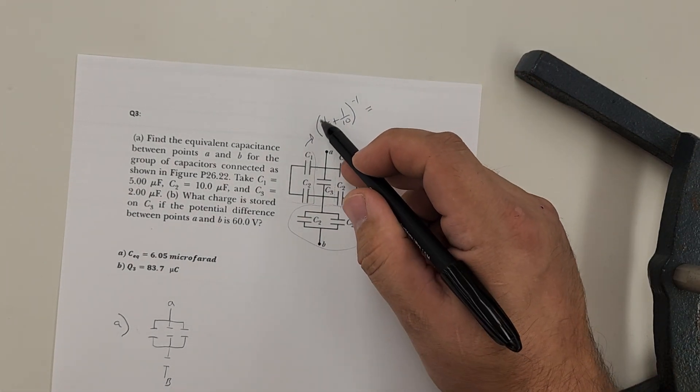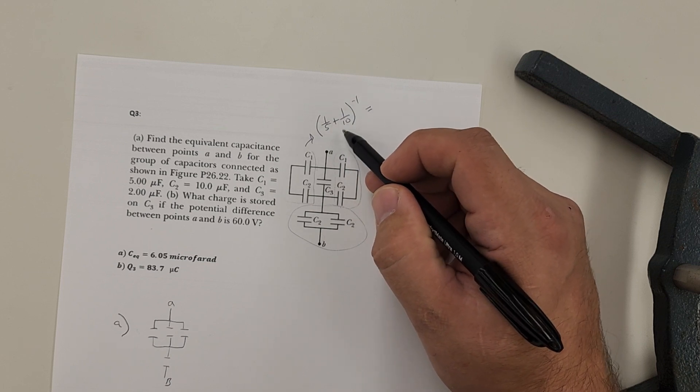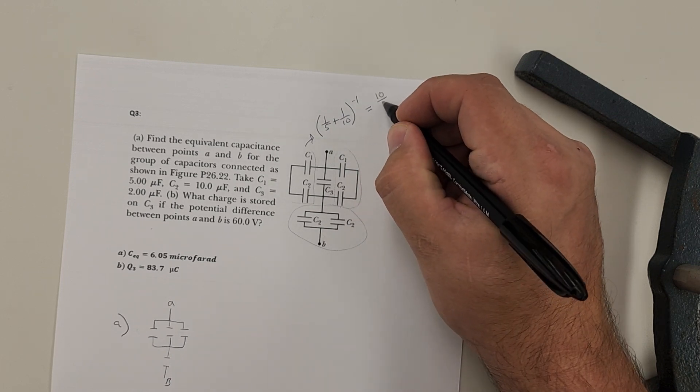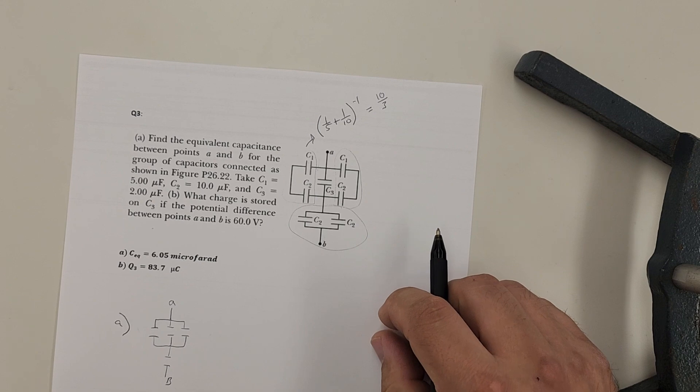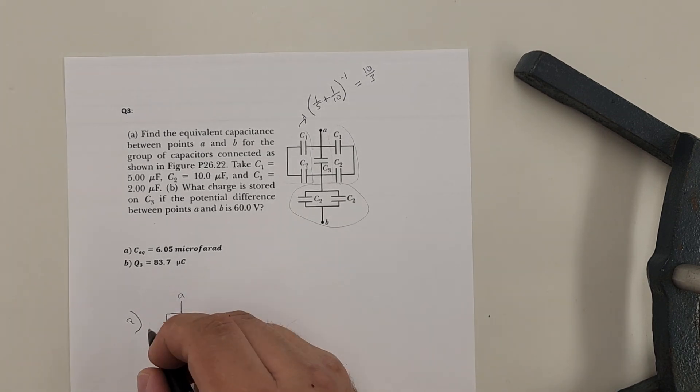Okay. Or what that means is I could do this as two tenths plus one tenth gives me three tenths. Flip it over and I'll get 10 over three. Okay. So this first one is ten thirds.